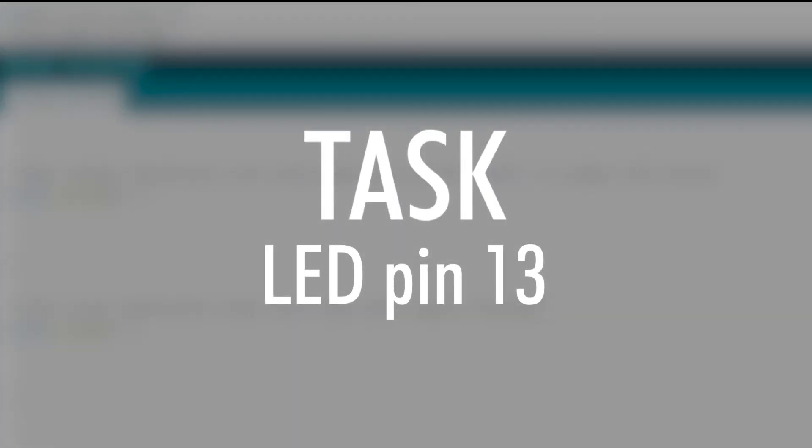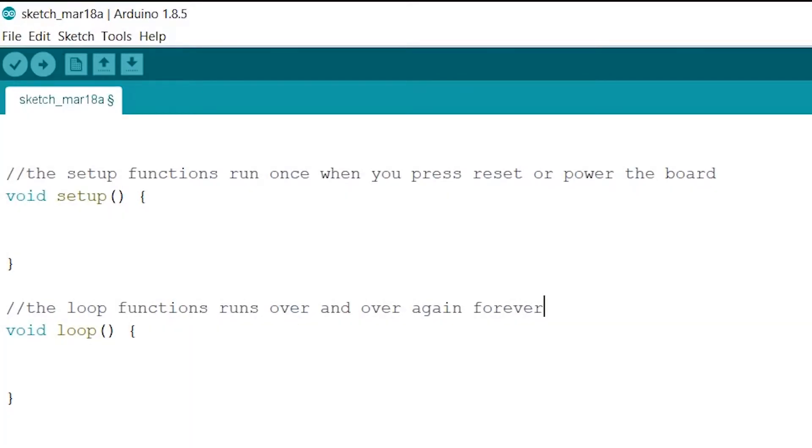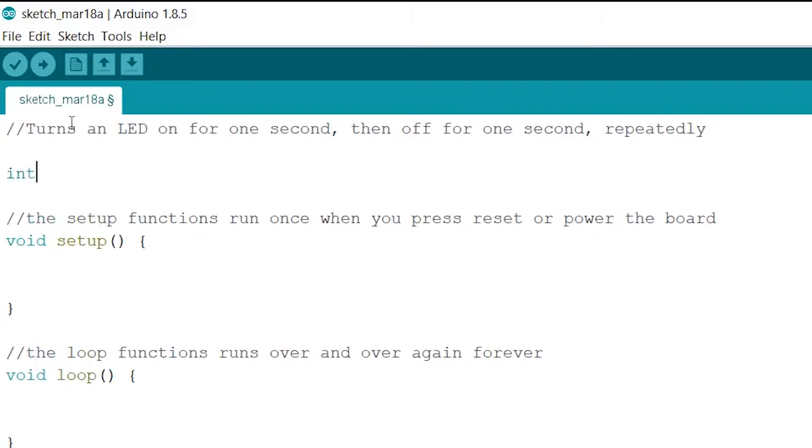Now let's start with making the LED blink on pin number 13. First, write a little comment on what's going to happen above our code. Alright. Now we write int led equals 13 semicolon. Meaning that with this rule, we make a variable of the type int integers with the name led. And we assign the value 13 to it. Note that each statement must be closed with a semicolon. So I add an extra comment.